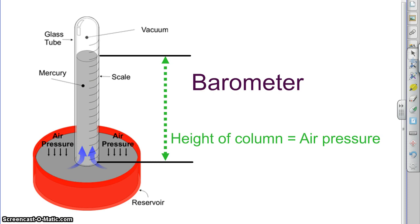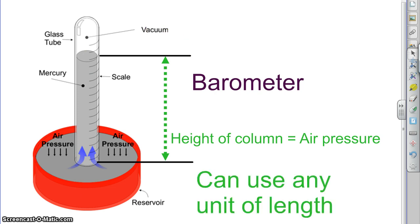A lot of times our air pressures are measured in inches of mercury or millimeters of mercury, and that's why. At standard pressure, we would expect this would be about 760 millimeters tall, about 76 centimeters, about three-quarters of a meter stick. Any length will work.